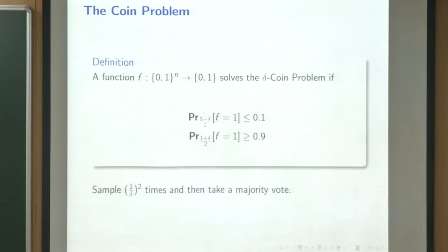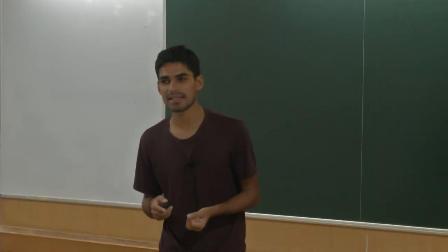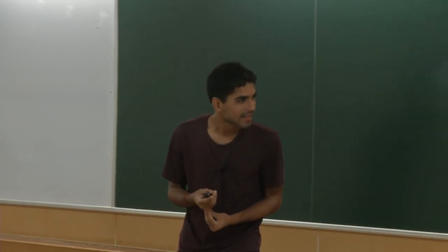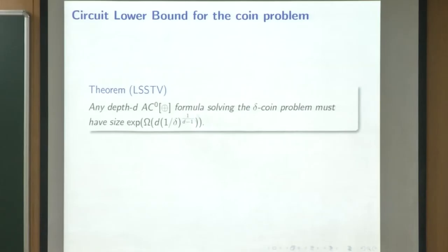We can sample roughly 1/delta-squared times, and by the law of large numbers, the majority function simply solves the delta coin problem. Here we are interested in the circuit complexity of the coin problem — specifically, how small an AC0 parity circuit can be and still solve it. Majority is not optimal: the AC0 complexity of majority on 1/delta-squared samples is not the optimum. We have a lower bound showing the size must be exponential in 1/delta to the 1/(d-1), and a matching upper bound from earlier work.